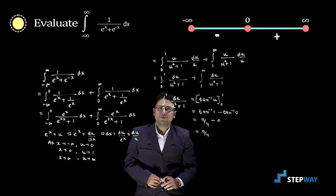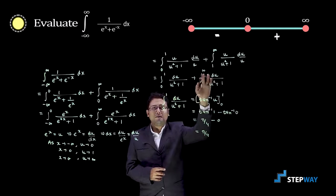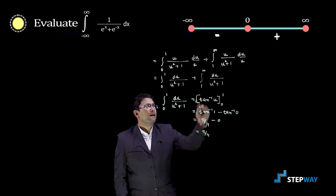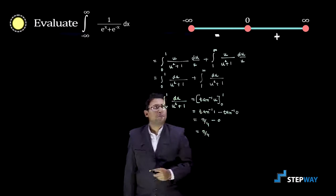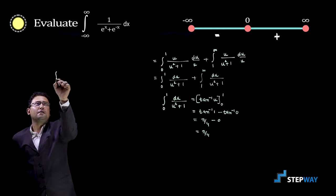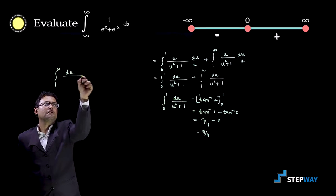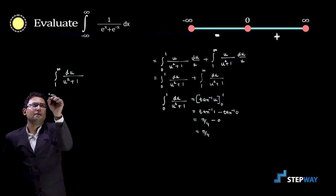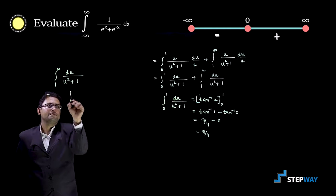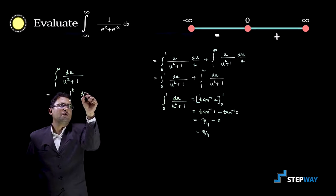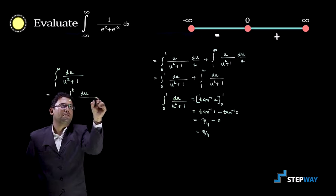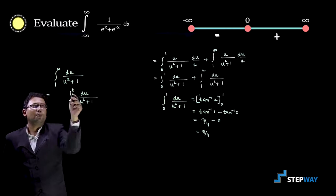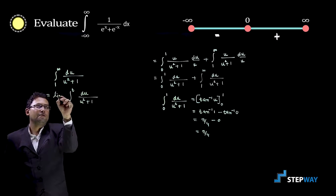Now we evaluate the second term: integration from 1 to infinite of du upon u squared plus 1. Since the upper limit is infinite, this is an improper integral of type 1. We replace infinite by t, giving integration from 1 to t of du upon u squared plus 1, and then apply the limit as t tends to infinite outside the integration.